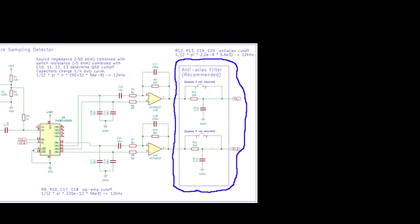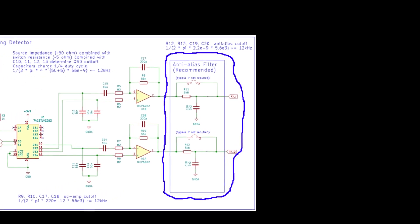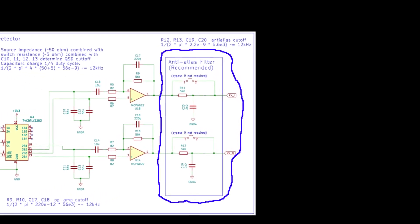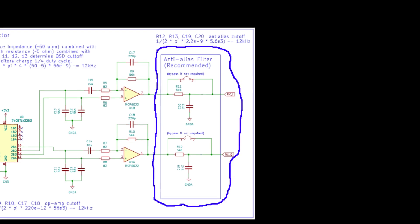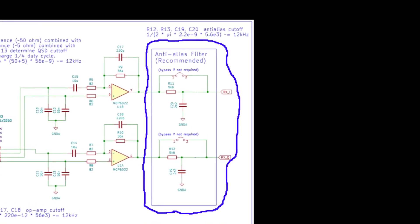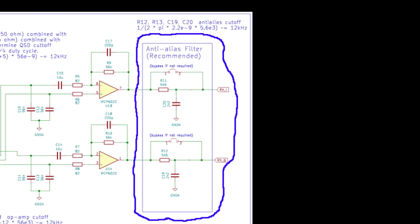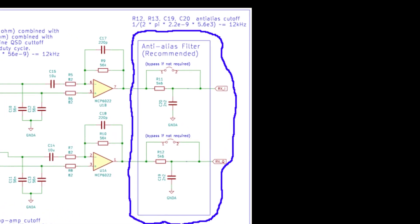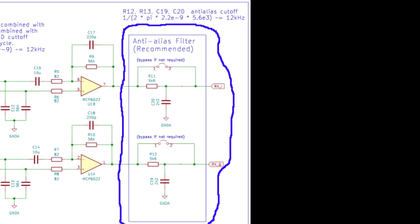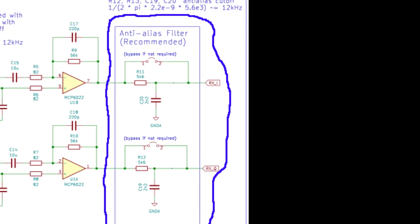Fortunately, we can get a massive improvement in performance by adding a simple low-pass filter between the Tayloe detector and the ADC. This mod just needs two resistors and two capacitors. This makes the circuit slightly more complicated, but I think the improvements in performance make it worth it.